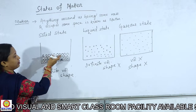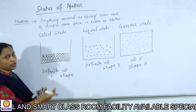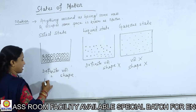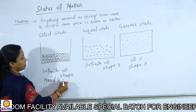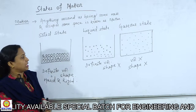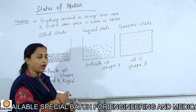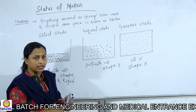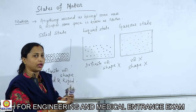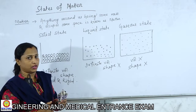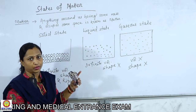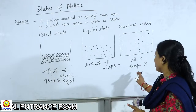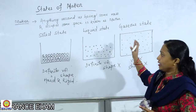Because solid has strong intermolecular forces of attraction, it maintains its shape — solids are hard and rigid in nature. Liquid has a tendency to flow; if you keep liquid in a container, it takes the shape of that container but maintains a definite volume. Gas has neither definite shape nor definite volume.